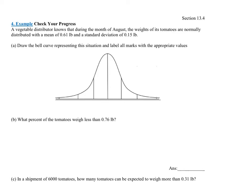Draw the bell curve representing the situation, labeling all the marks and values. Again, part A would not be in the homework or the quiz. They just straight up start asking you what percent of tomatoes weigh less than 0.76 pounds. Well, that's very difficult to answer if you don't see it. So I always want you to start by seeing it.